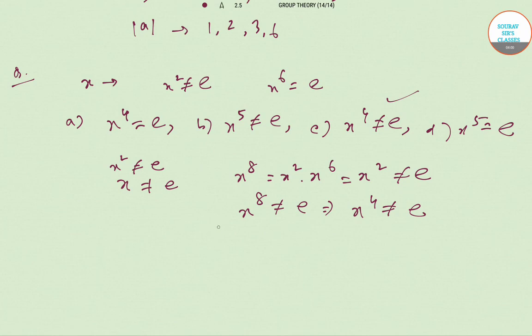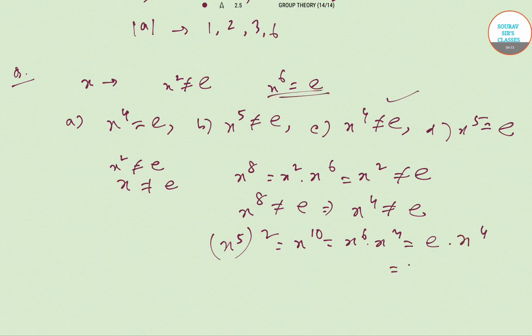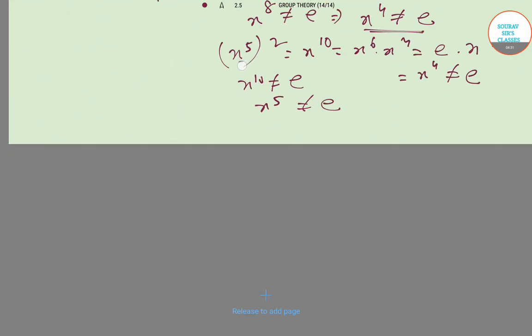For X^5: consider (X^5)^2 = X^10 = X^6 · X^4 = E · X^4 = X^4, which is not identity as we've shown. So X^10 is not identity, meaning X^5 is also not identity. Therefore both B and C are true. Group theory is not about formulas — you have to develop a pattern and a feel for solving it.